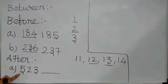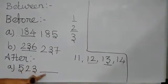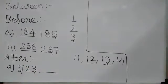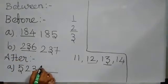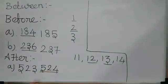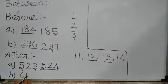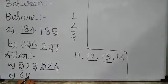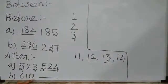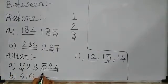The first one: 523. What will come after 523? 524. Very good. The second one: 610. What will come as the next number? 611. Very good.